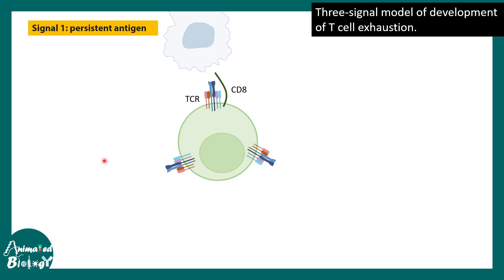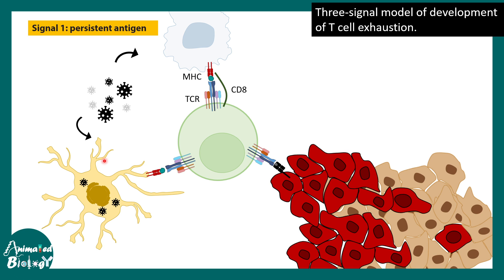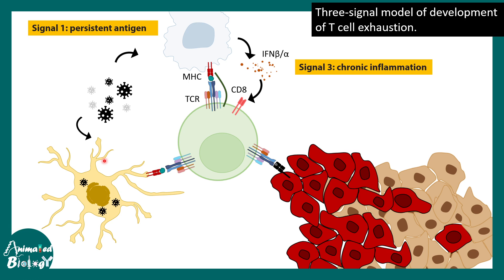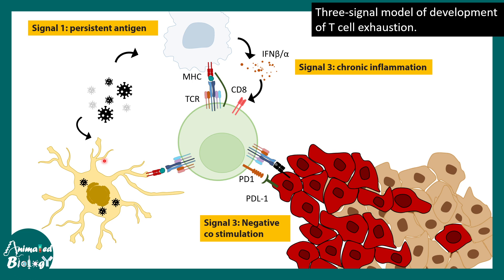There are three signal models explaining T cell exhaustion. First, persistent antigen presentation — such as from proliferative tumor cells — drives exhaustion. Second, chronic inflammation mediated by interferon beta and gamma signaling, similar to repetitive viral infection, can also cause exhaustion. Third, negative co-stimulation signaling — for example, repetitive PD-L1/PD-1 signaling. Tumor cells are particularly problematic: not only do they divide too fast to be matched by T cell killing, they also secrete molecules that suppress T cell activity, expressing inhibitory ligands that actively exhaust T cells while promoting their own growth.